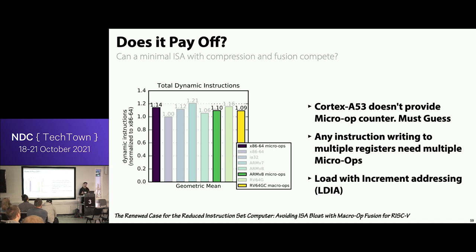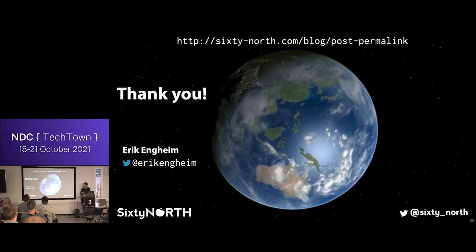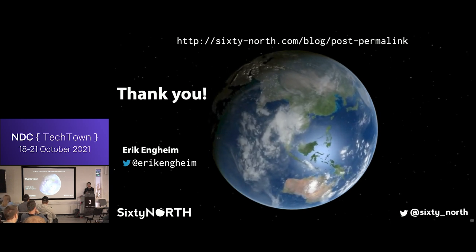In total, what I think is great about this is that you can have a simple instruction set that's easy to learn without sacrificing performance. This has only been possible because RISC-V was designed knowing about compressed instructions and macro-fusion from the start. Thank you — do we have time for questions?